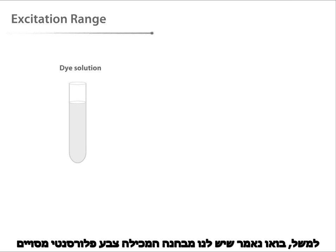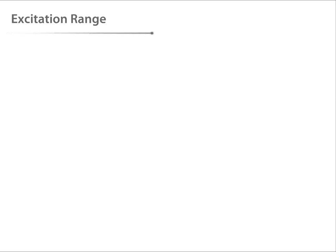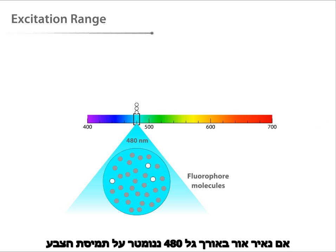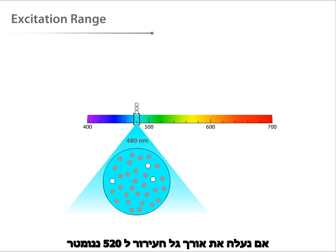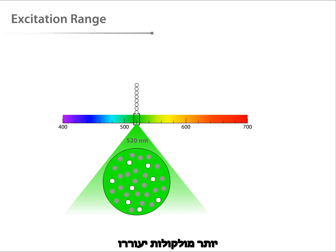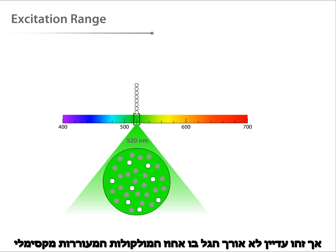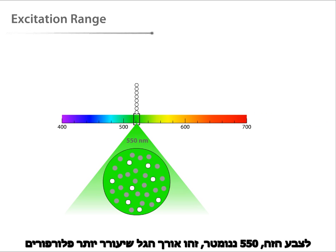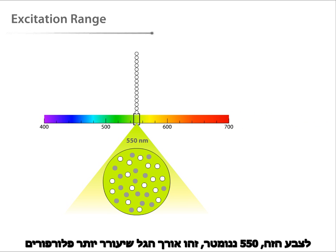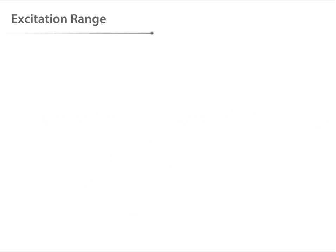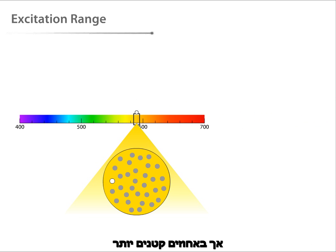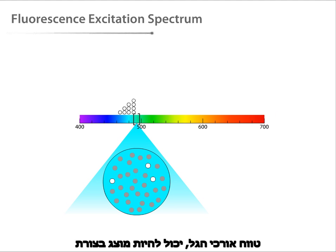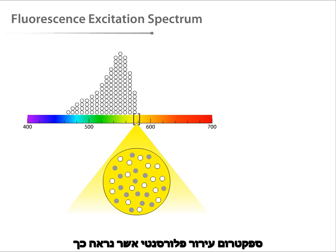For example, let's say that we have a tube that contains a particular fluorescent dye. If we shine 480 nanometer light at the dye solution, some of the fluorophore molecules will become excited. However, the majority of the molecules are not excited by this wavelength. As we increase the excitation wavelength to 520 nanometers, more molecules are excited, but this is still not the wavelength at which excitation is maximal. For this particular dye, 550 nanometers is the wavelength that excites more fluorophores than any other. At wavelengths longer than 550 nanometers, the fluorophore molecules still absorb energy and fluoresce, but in smaller proportions. The range of excitation wavelengths can be represented in the form of a fluorescence excitation spectrum.